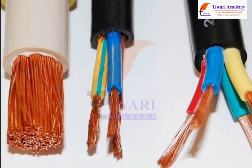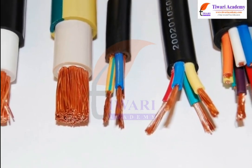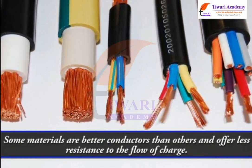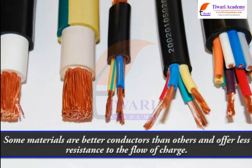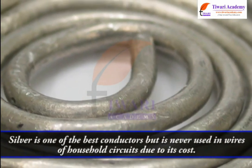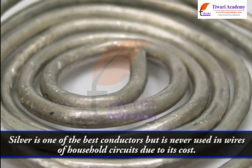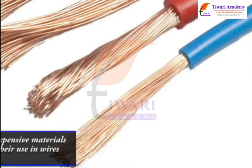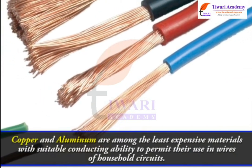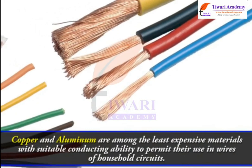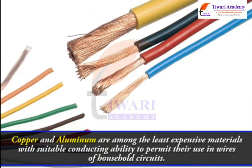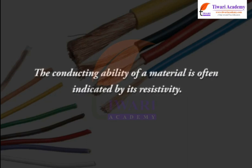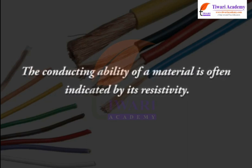Not all materials are created equal in terms of their conductive ability. Some materials are better conductors than others and offer less resistance to the flow of charge. Silver is one of the best conductors but is never used in wires of household circuits due to its cost. Copper and aluminum are among the least expensive materials with suitable conducting ability for use in household circuit wires. The conducting ability of a material is often indicated by its resistivity.